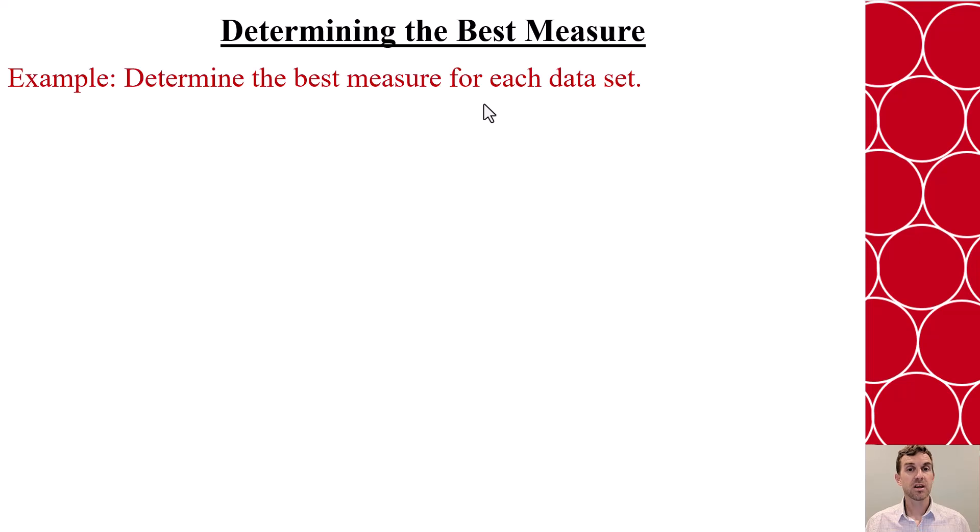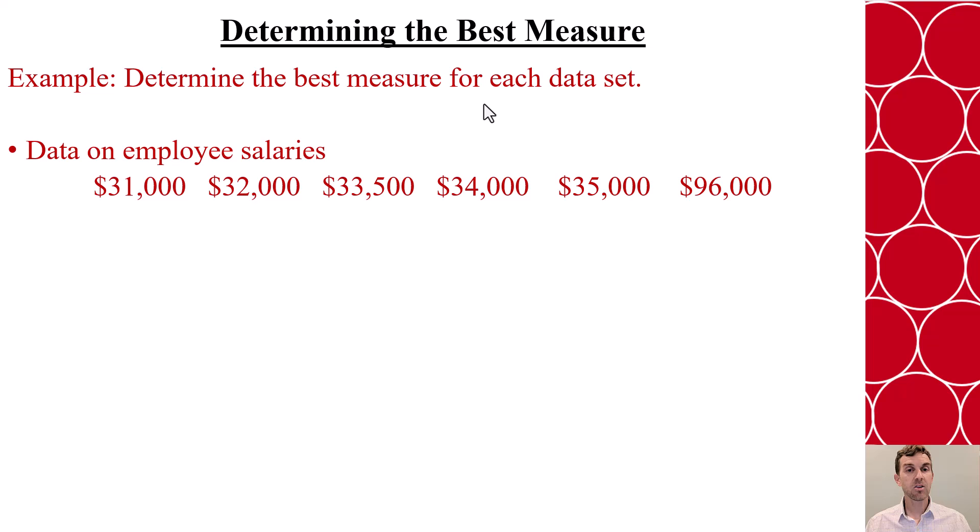Let's look at some examples. Say that we have data on employee salaries. And if I look at these six entries, the first five are relatively close, and then this one, $96,000, it's way out there from everything else. In that case, we'd want to use the median to calculate the measure of central tendency.